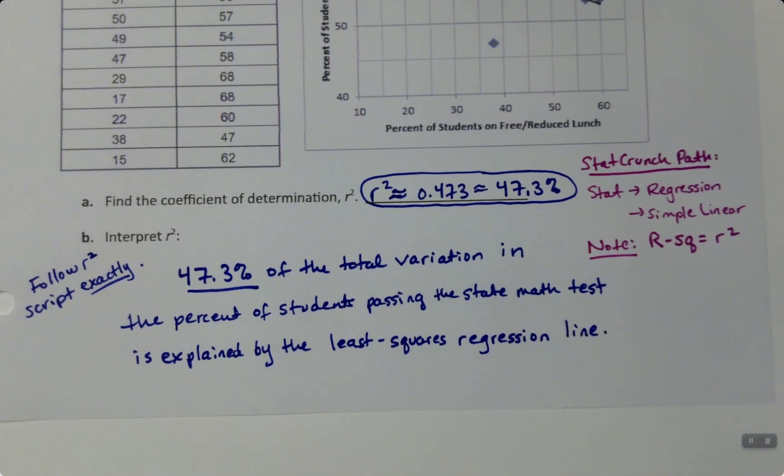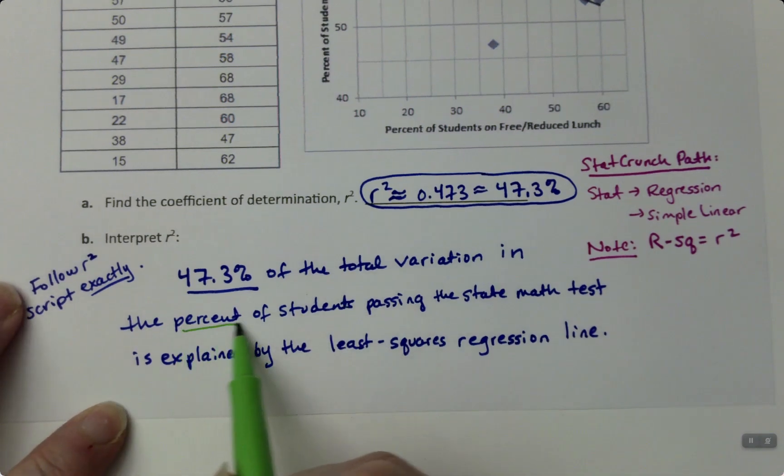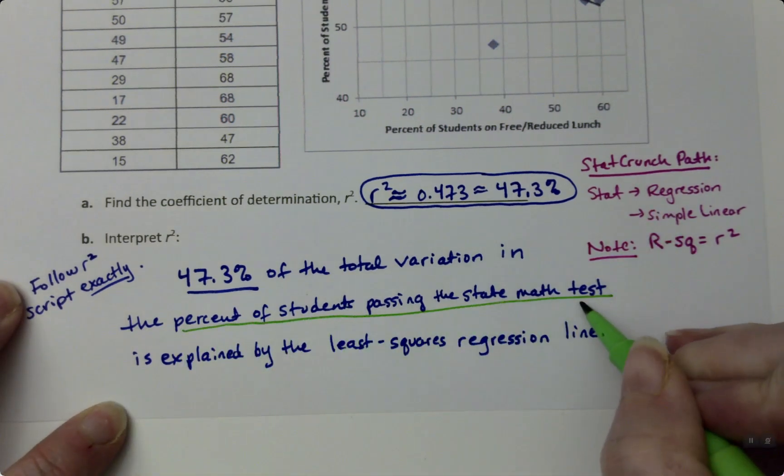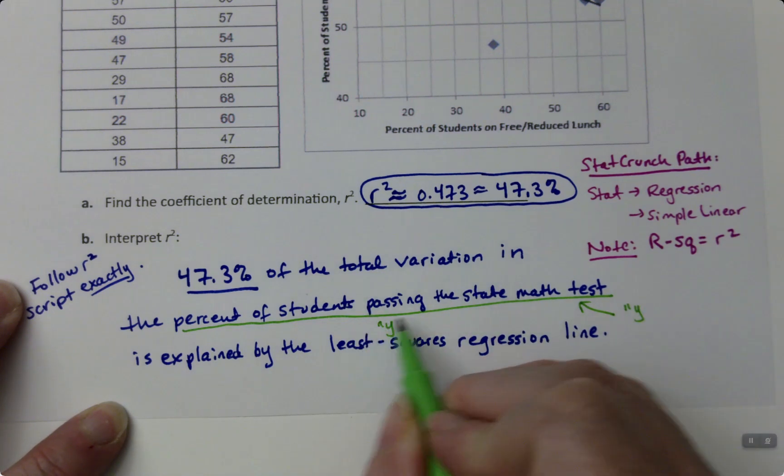That's it. Don't mess with it, don't deviate. Just leave it as it is. This whole part—'percent of students passing the math test'—that's the Y in context.